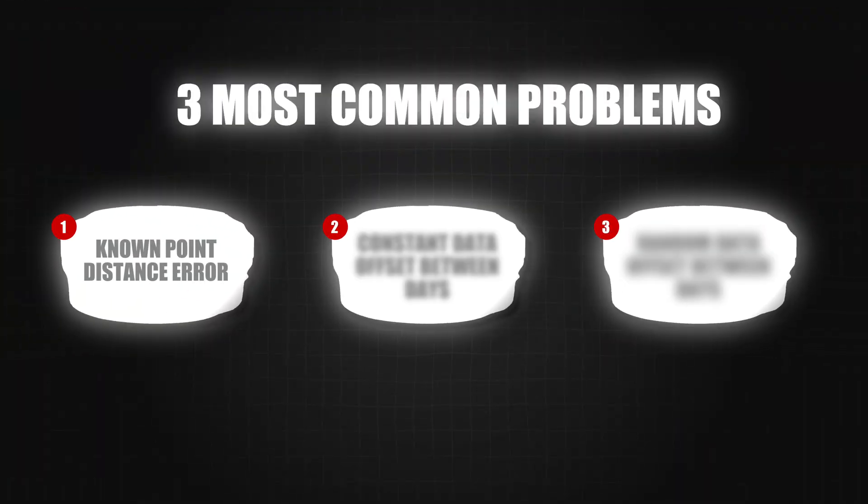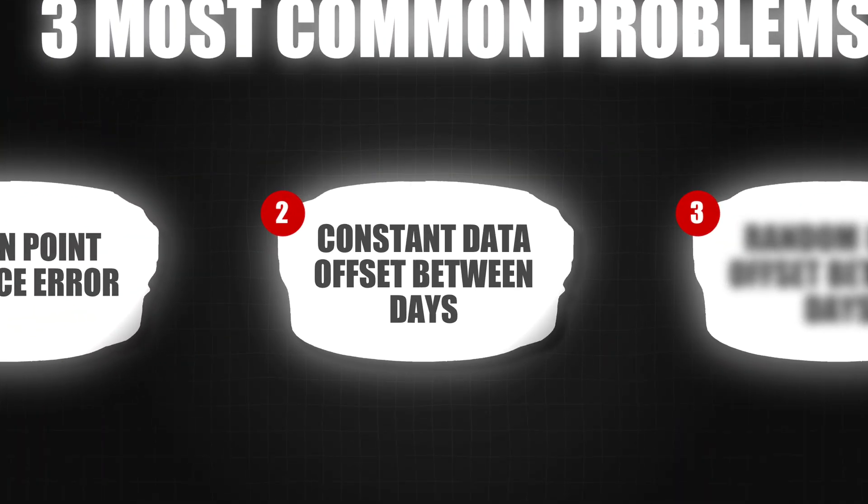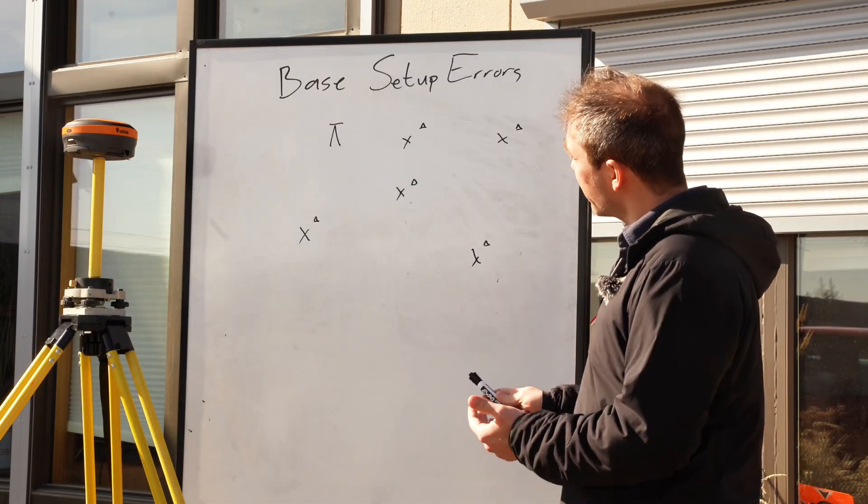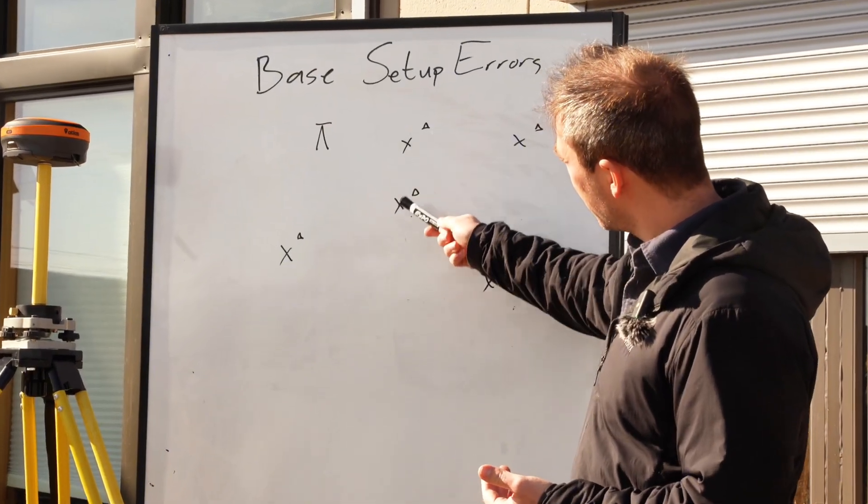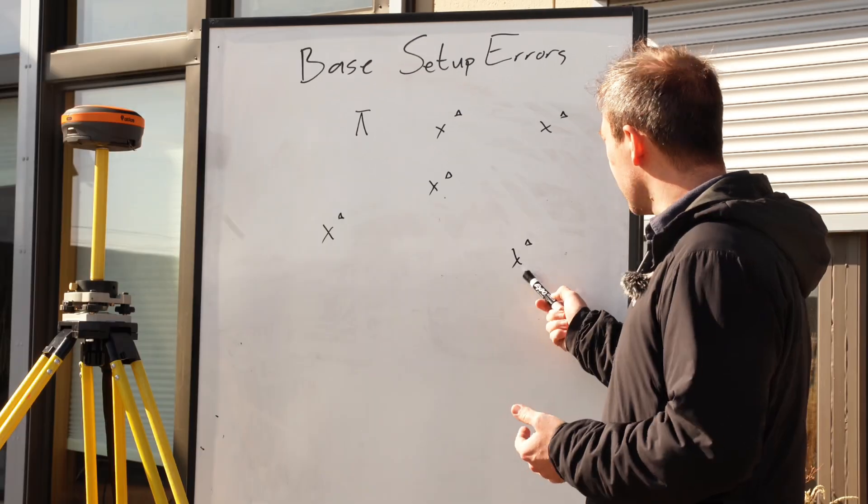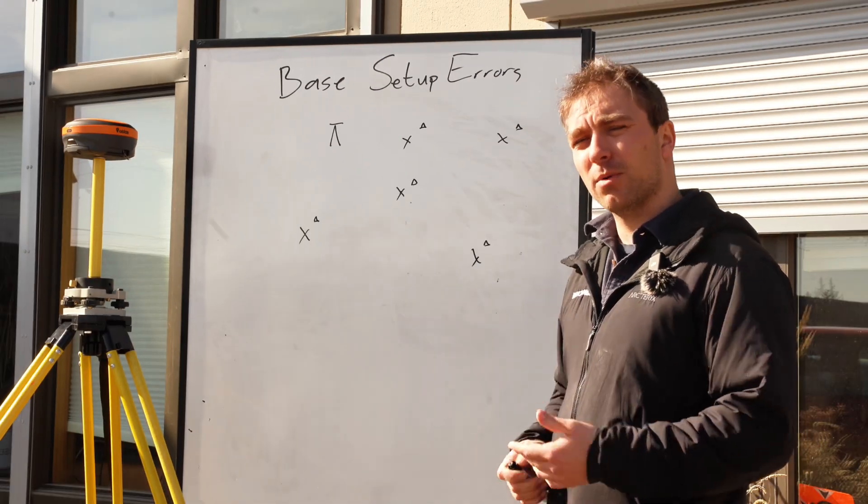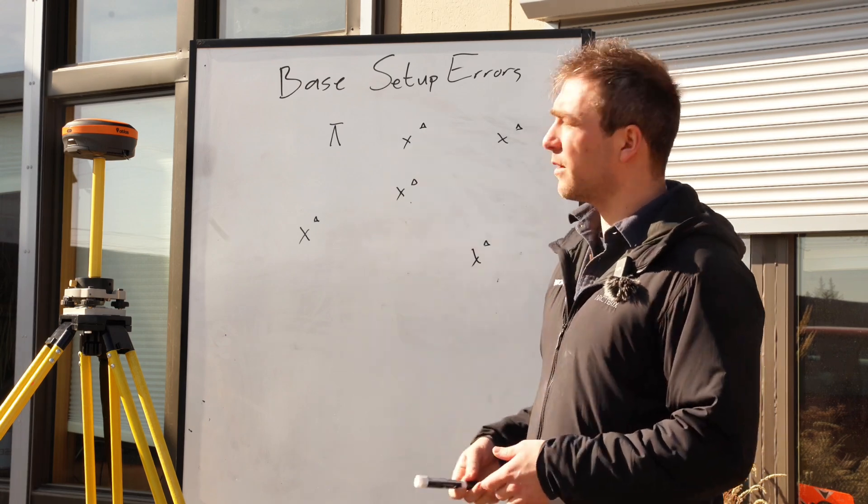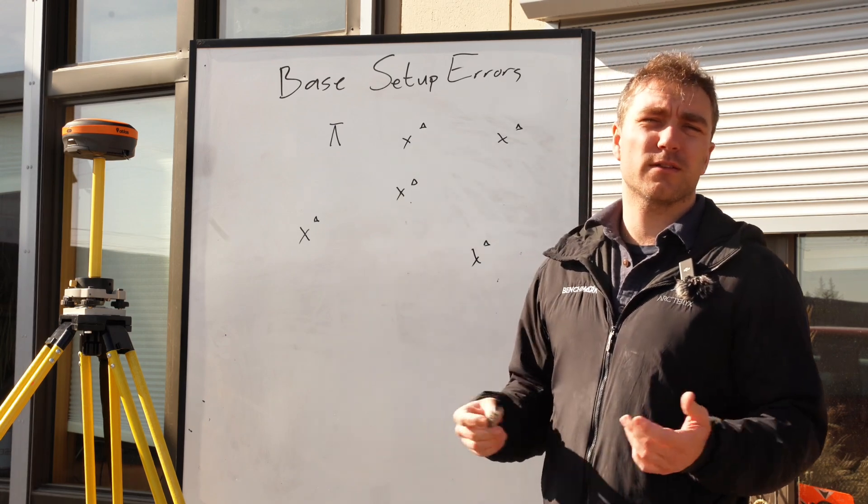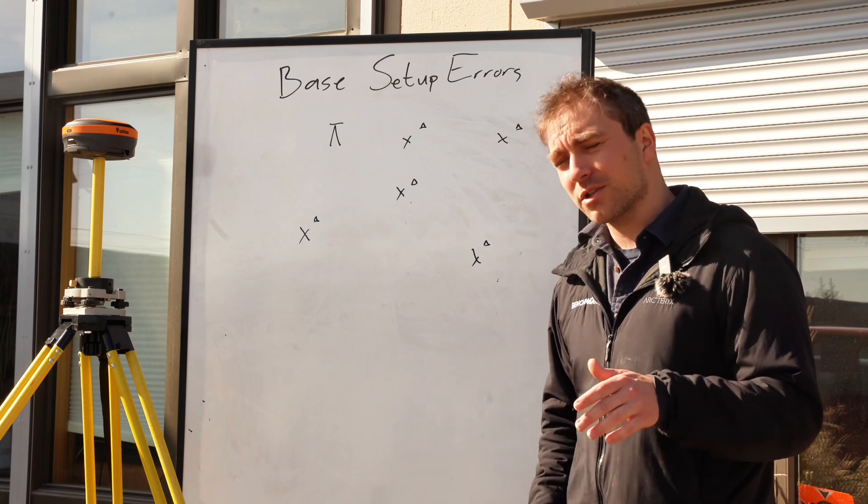Problem number two is when you do a survey over two days and then you take a look at your data and you notice that all your data from day one to day two is shifted by a constant amount in the same direction. You go, that doesn't make sense, I was on the same points, why have I moved a foot to the northeast and a foot in elevation? And usually that's because guys have done two average point setups on the same job.